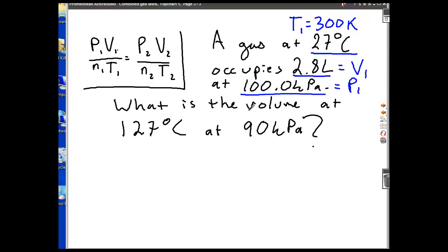What is the volume? So, I want to know right away what the volume is. At 127 Celsius, what is this? It's my second temperature. What do I have to do? And I get 400 Kelvin at 90 kPa. That's my, what variable is that? My pressure, my second pressure.